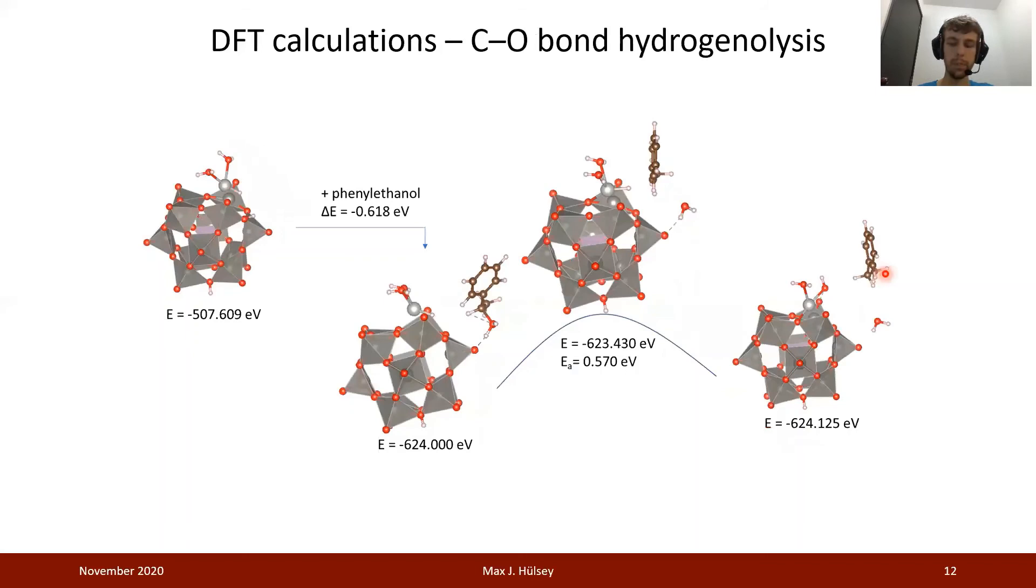After we have formed the 1-phenylethanol intermediate, this then follows after yet another step of hydrogen activation. First water is formed from the OH group by a proton transfer from the polyoxometalate, followed by the hydride transfer from palladium onto this positively charged intermediate, and then releasing the hydrocarbon.